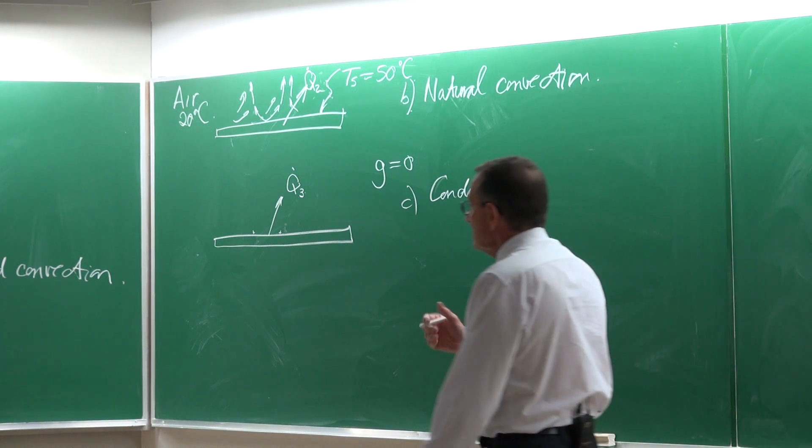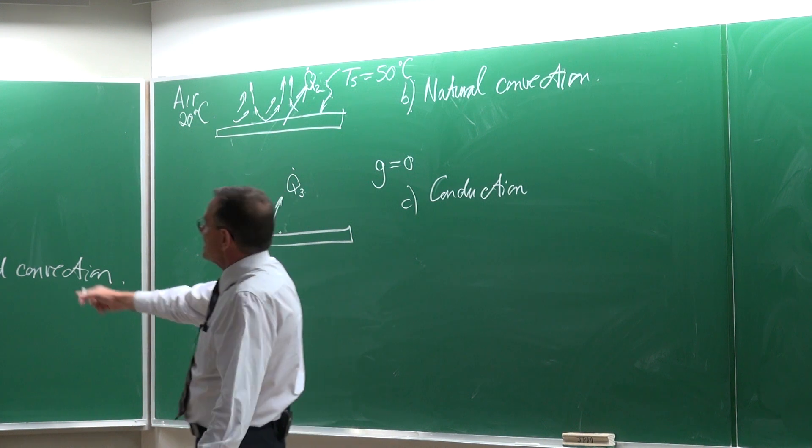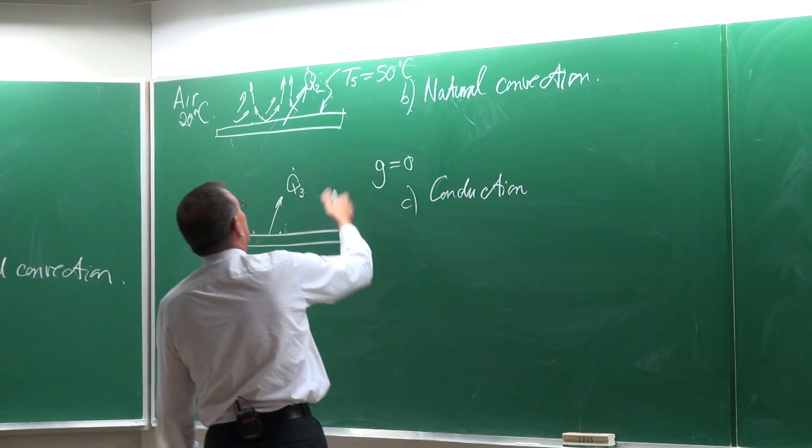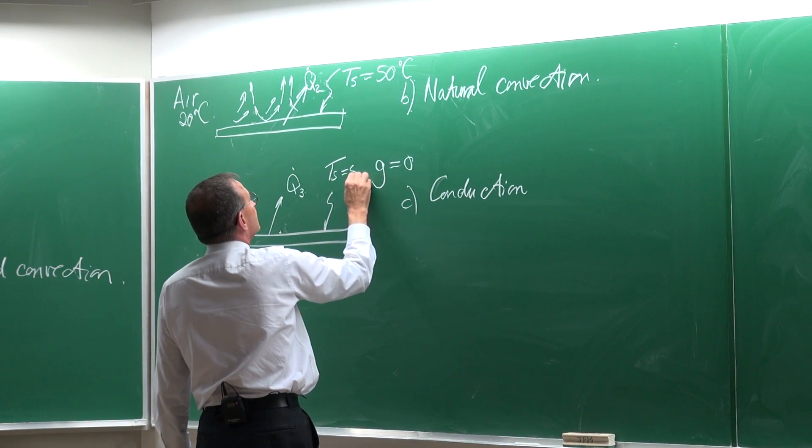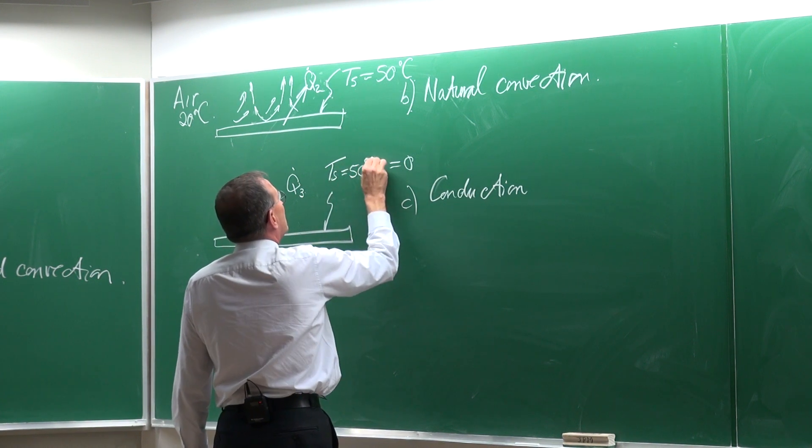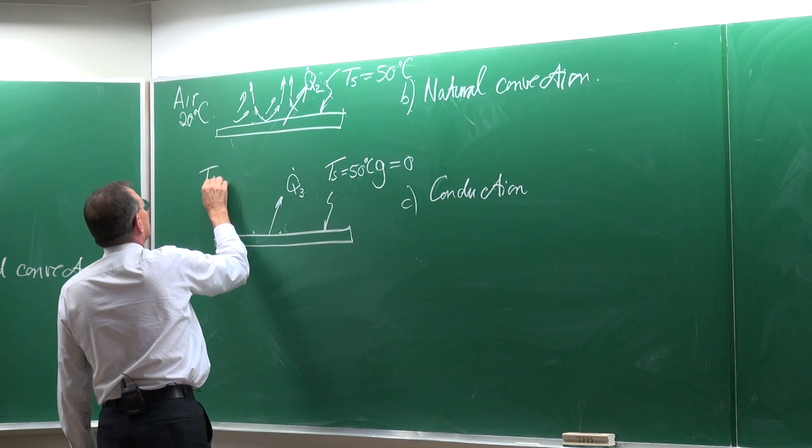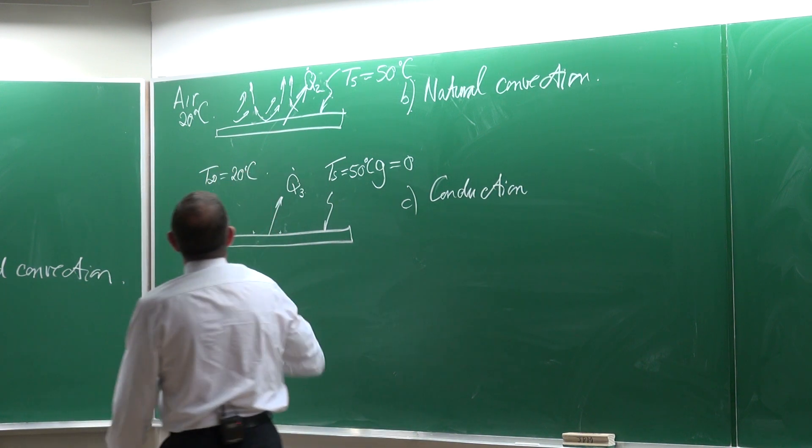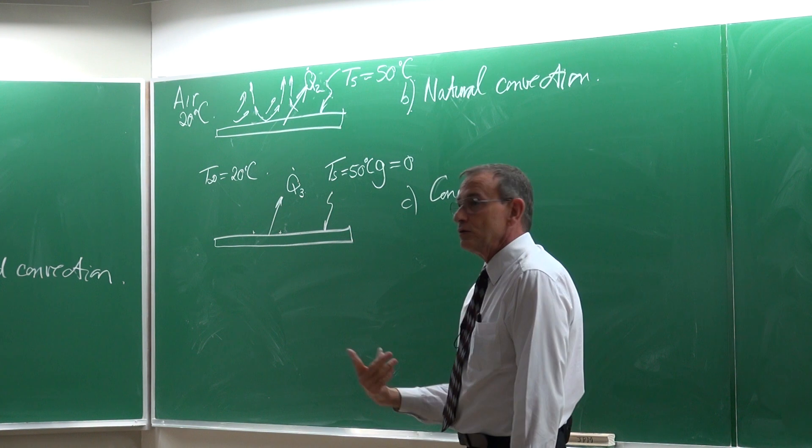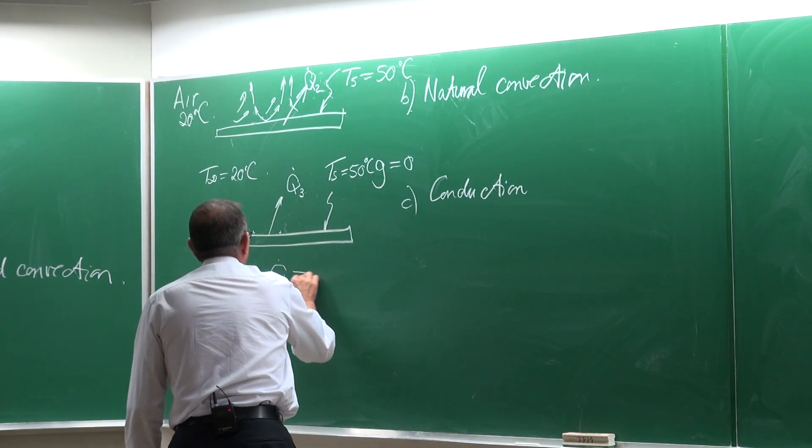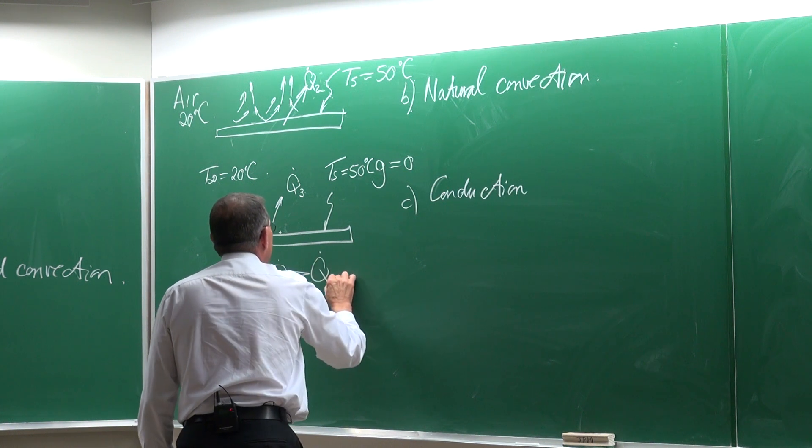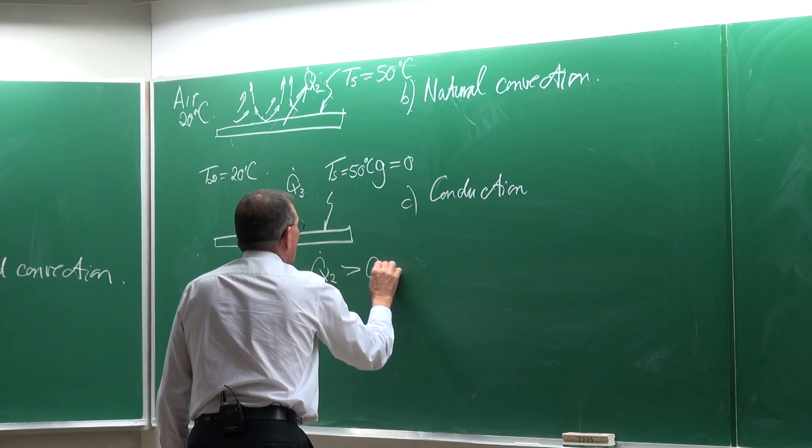Now what we will see is that for the same heated plate of 50 degrees Celsius, the surface is 50, the ambient air is 20, in general we will see that Q1 the heat transfer of 1 would be more than 2 and that would be more than 3.